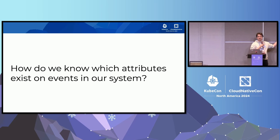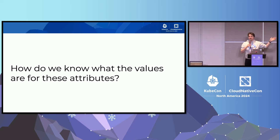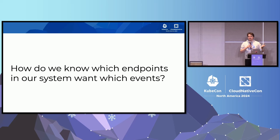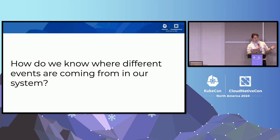But there are some hard questions when writing filters. How do I know which attributes actually exist on events in my system? Even if I know an attribute is there, how do I know what values it can have? How do I know which endpoints in my system want which events? In a large decoupled event-driven system with hundreds of event sources and dozens to hundreds of event consumers, understanding what's flowing through gets really complicated really fast. And where are the events even coming from? This is where XRegistry comes in.